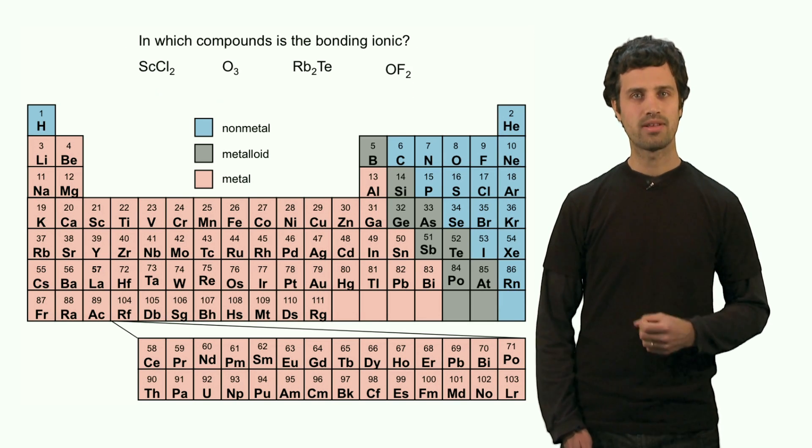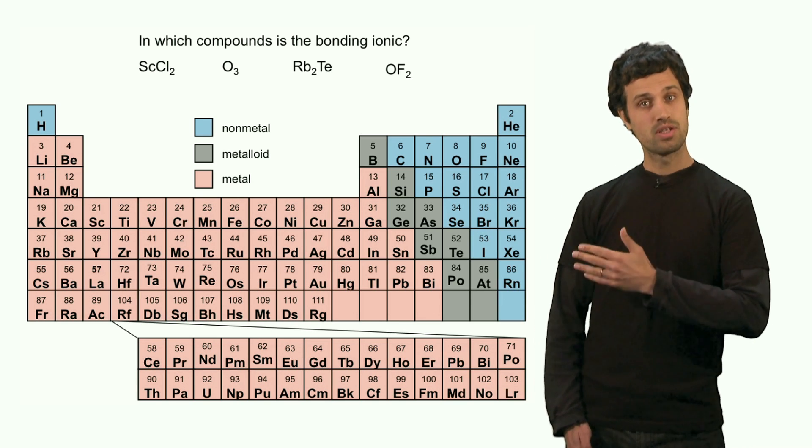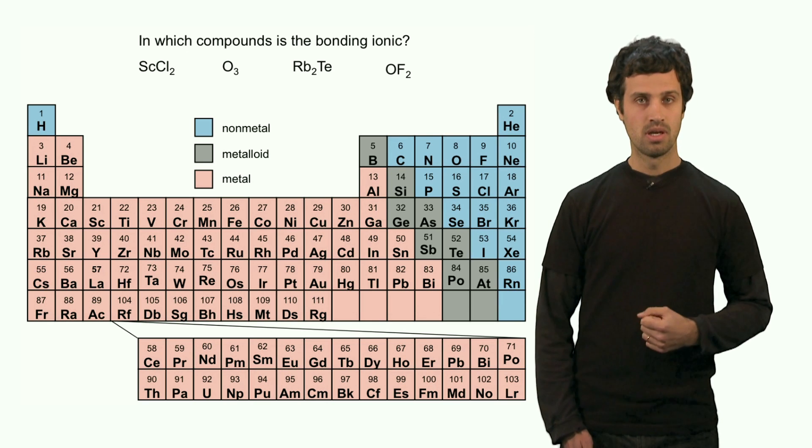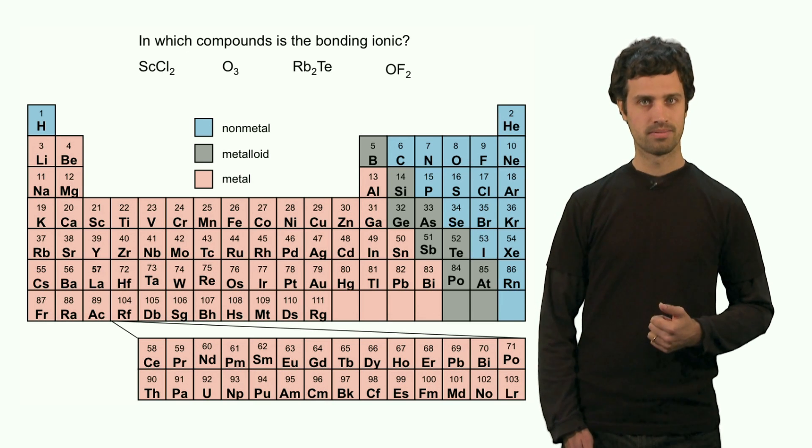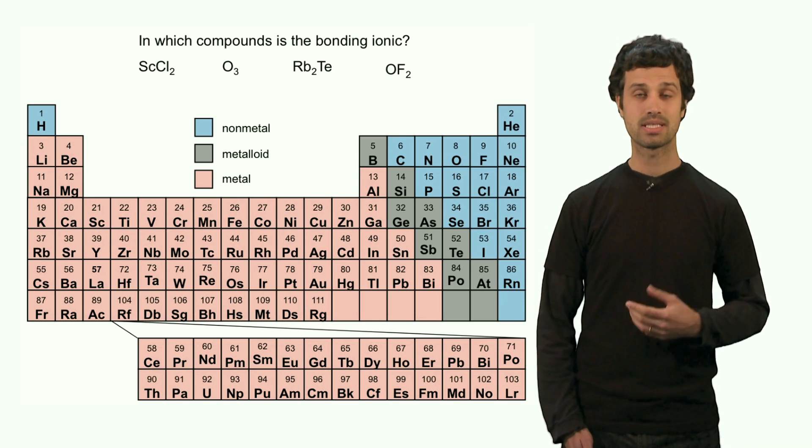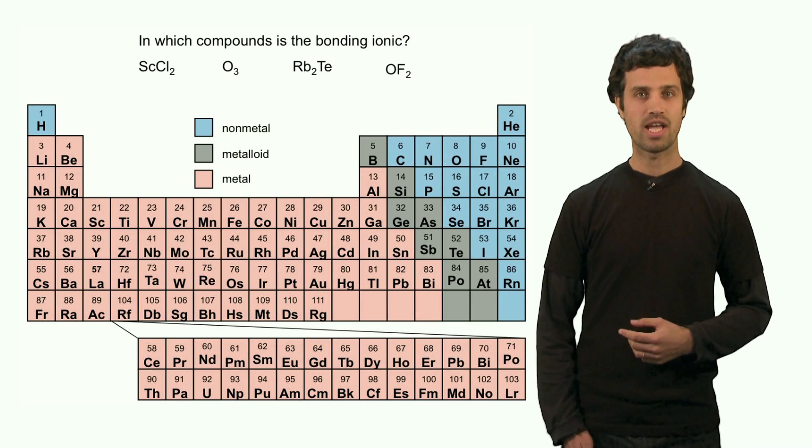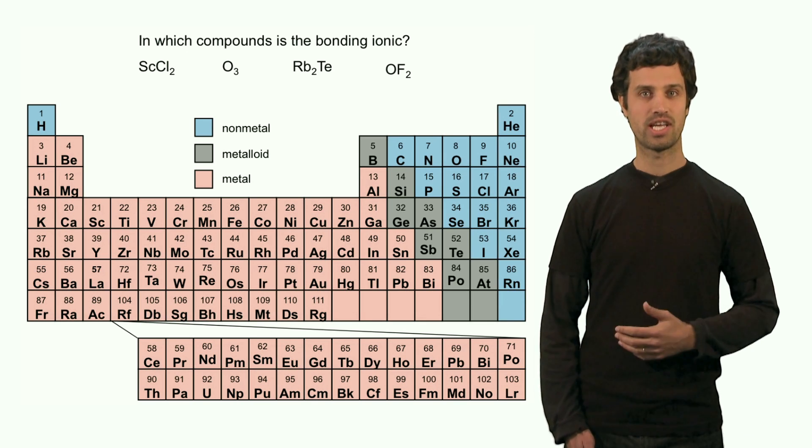Let us now look at four more examples and ask ourselves the question, is the bonding in these compounds ionic or covalent? So the first one is scandium chloride. Scandium is a metal. Chlorine, again, is a nonmetal. This is an ionic linkage. So this is an ionic compound.